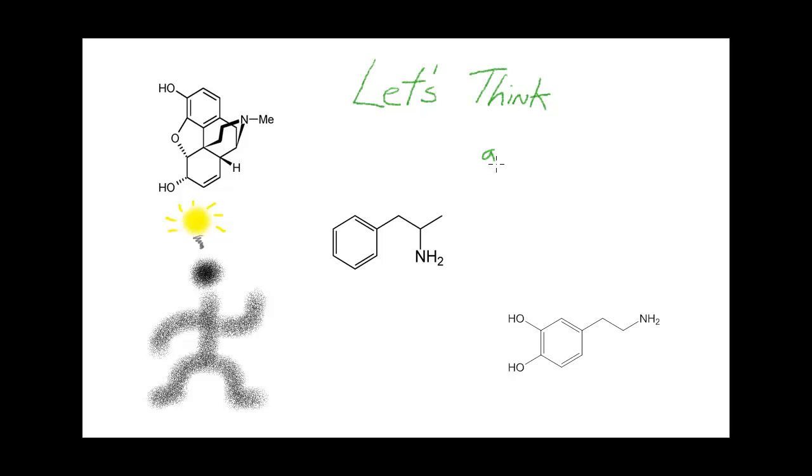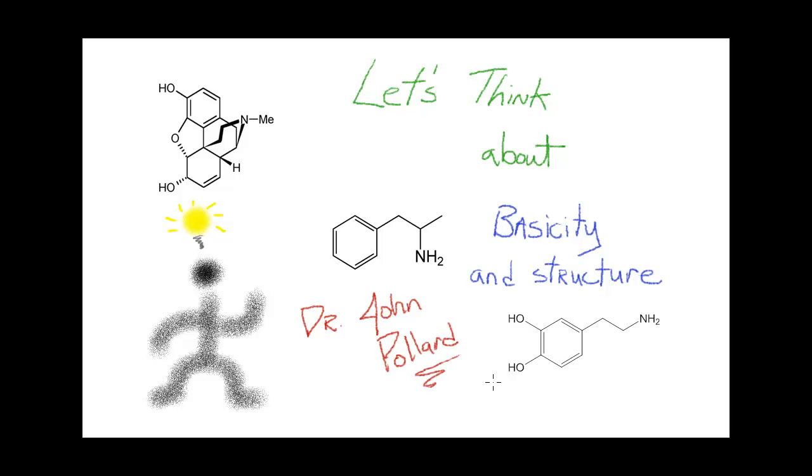As an example, I've picked out three biologically relevant molecules: morphine, amphetamine, and dopamine. I'm going to show you how you can go from the pKa values of these compounds to looking at the structures and evaluating factors that can be used to explain why one compound is a stronger base than another, and I'll also rank all three of these in terms of basicity based on that thinking.